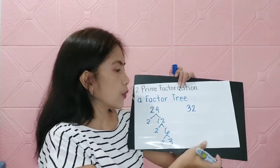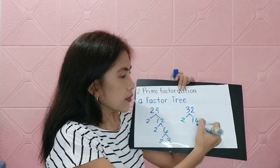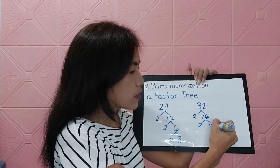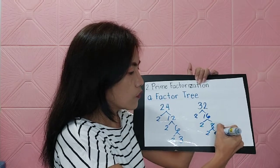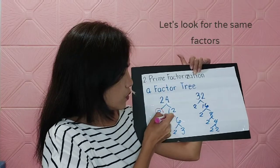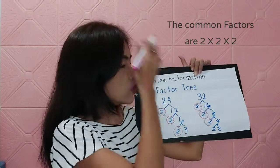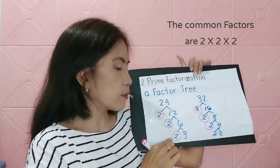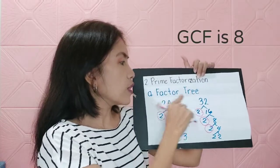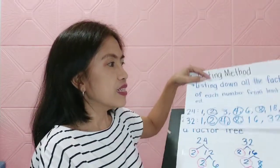For 32, we have 2 × 16. Continuing the factor tree for 32 gives us all 2s. When you multiply the common prime factors — 2 × 2 × 2 — you get 8. Therefore, the GCF of 24 and 32 using prime factorization is also 8, the same as our listing method.